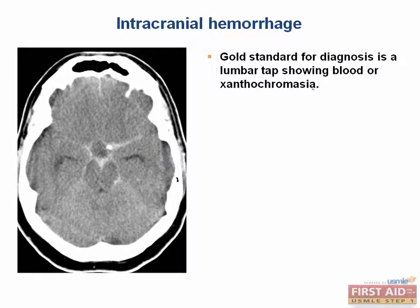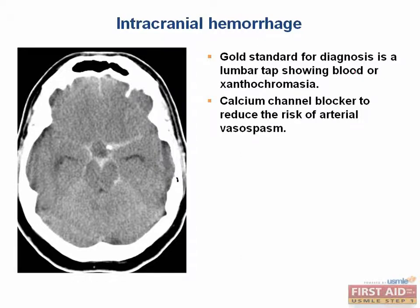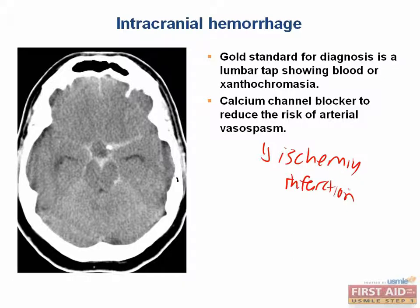The gold standard for diagnosis is a lumbar tap that would show either blood or xanthochromasia — basically the yellowish color due to breakdown products of blood. Once you've treated these patients acutely, they should be started on a calcium channel blocker to reduce the risk of arteriovasospasm, because this can lead to cerebral ischemia or infarction. This is a favorite board question — calcium channel blocker for patients treated for subarachnoid hemorrhage.